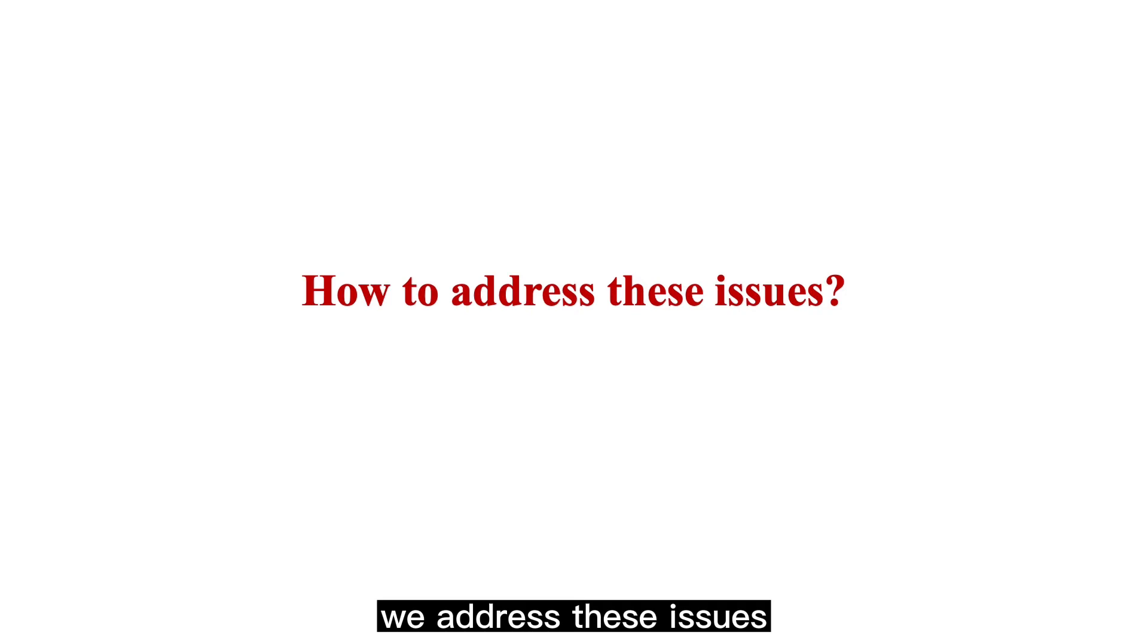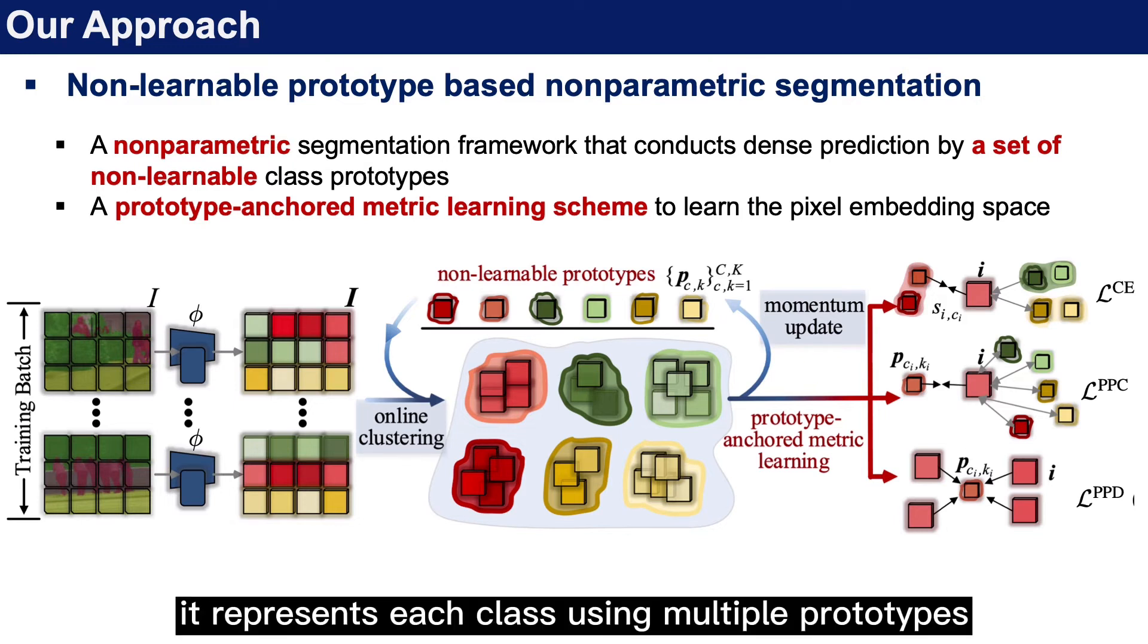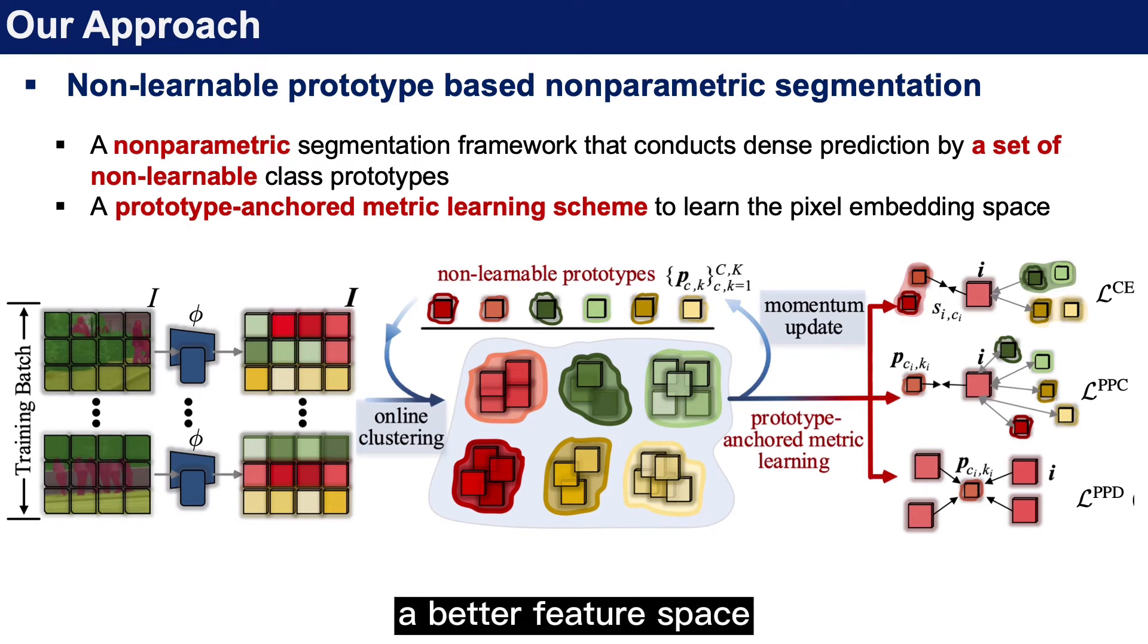We address these issues. We propose a non-learnable prototype-based non-parametric segmentation model. It represents each class using multiple prototypes, and these prototypes are non-learnable. In addition to the cross-entropy loss, we introduce a prototype-anchored metric learning scheme to learn a better embedding space.